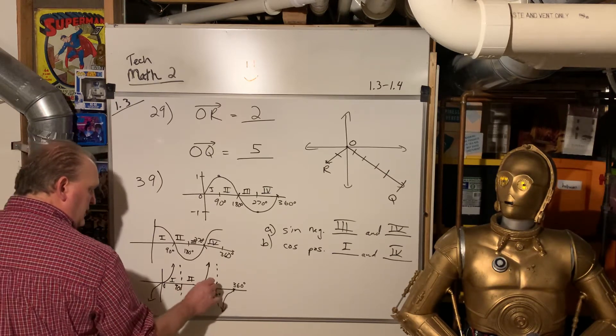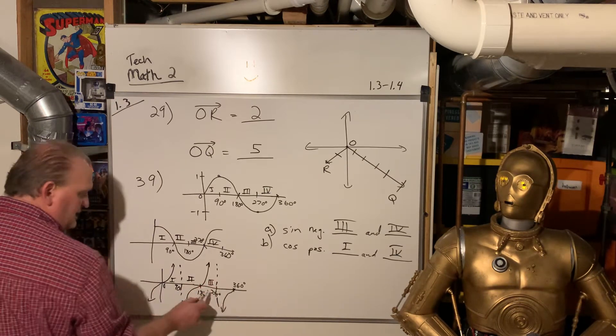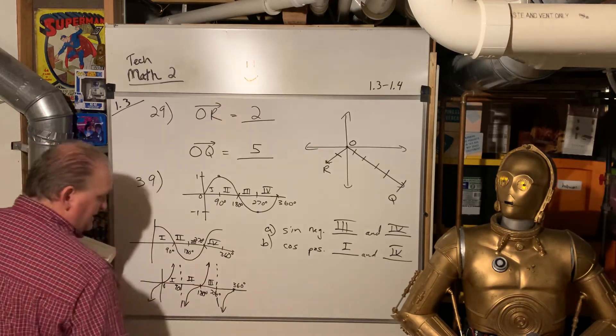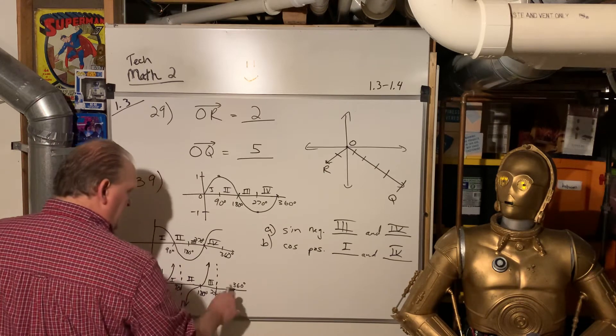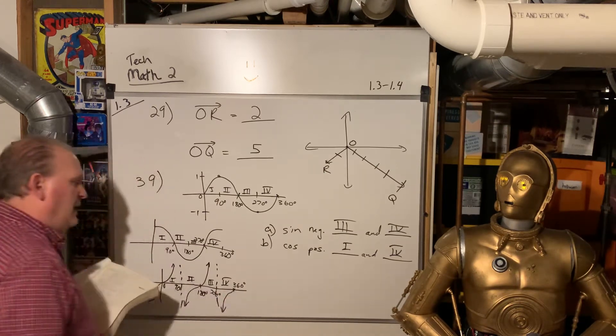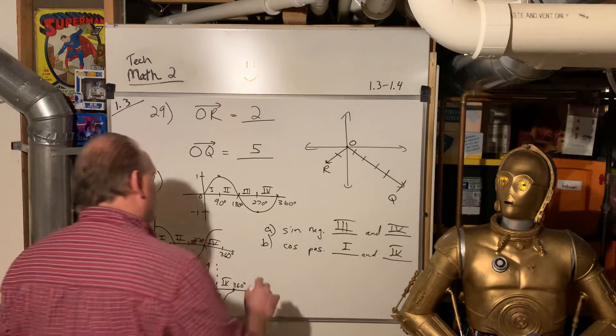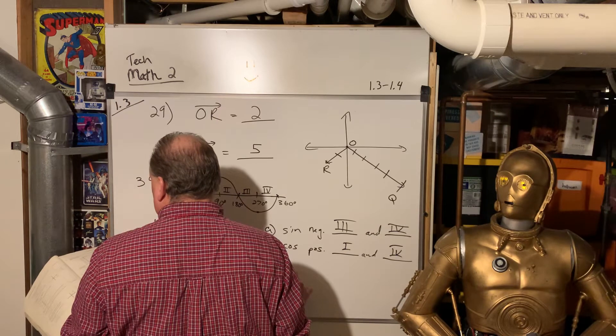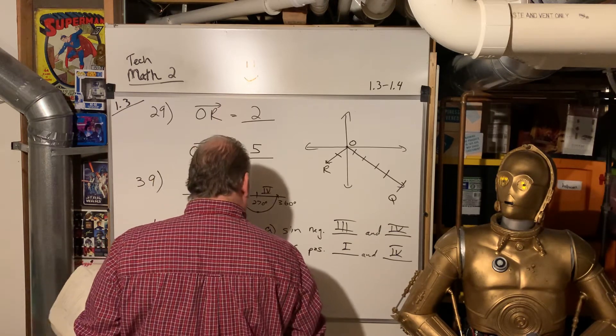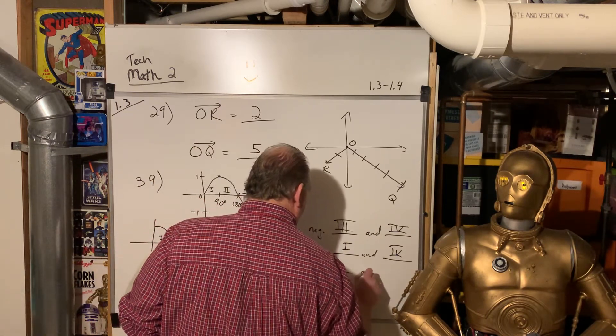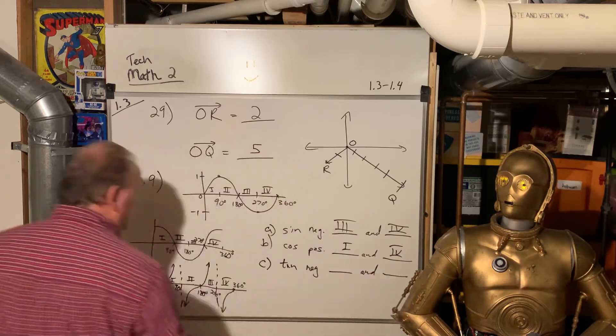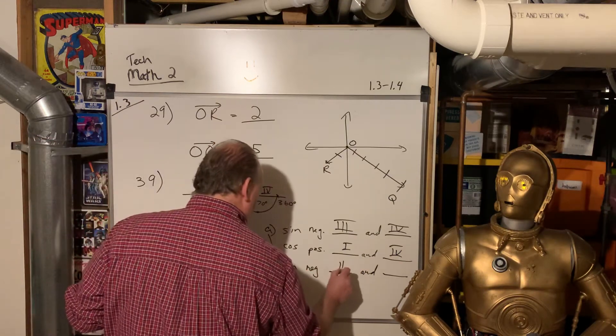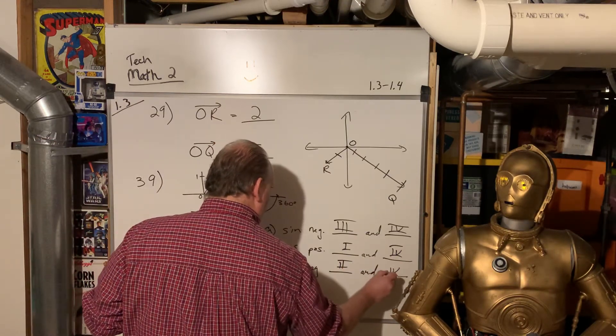Quadrant 2 is from 90 to 180. That's going to be negative. Quadrant 3, that's 180 to 270. That's above the board. So that's positive in the third quadrant. And then the fourth quadrant is negative. And so let's take a look at that. I want to know when is tangent negative. And so that is negative here and negative there, 2 and 4.